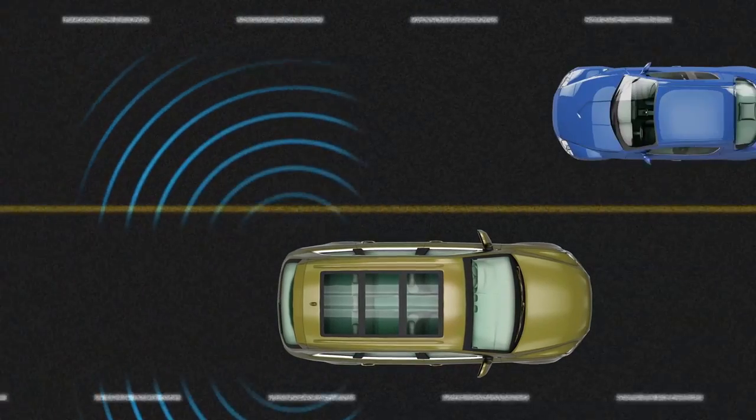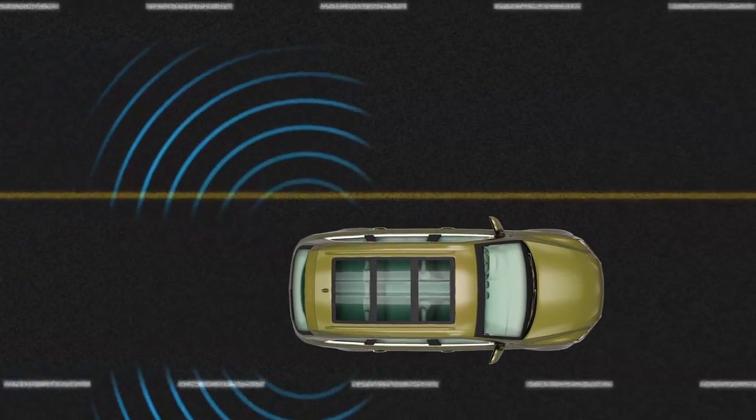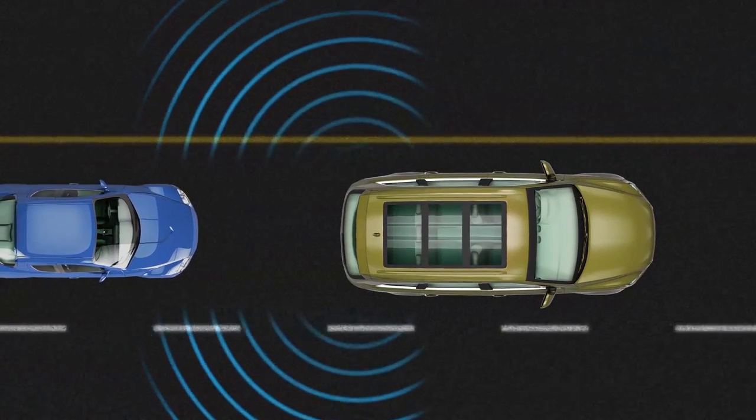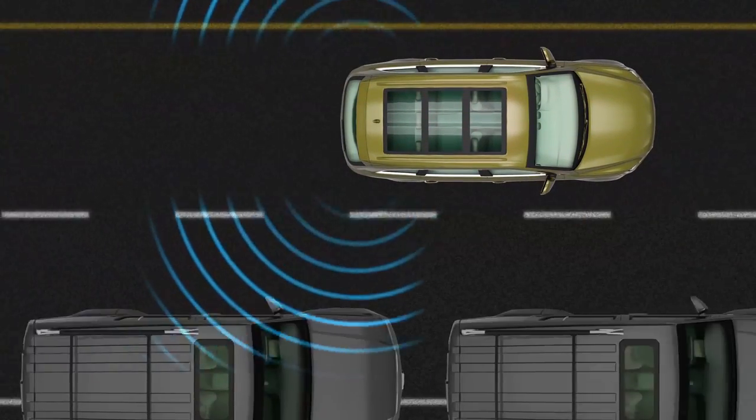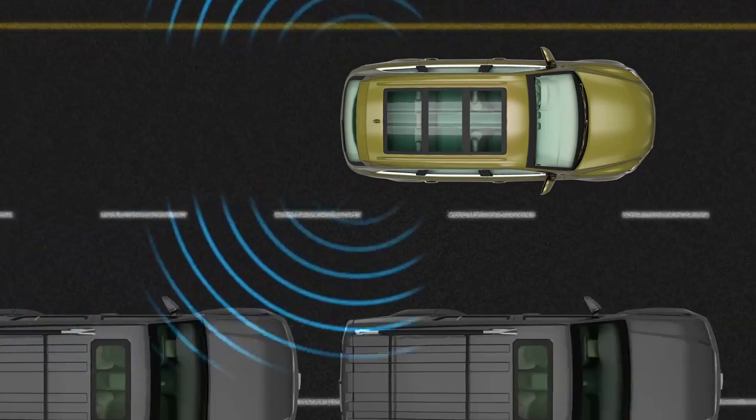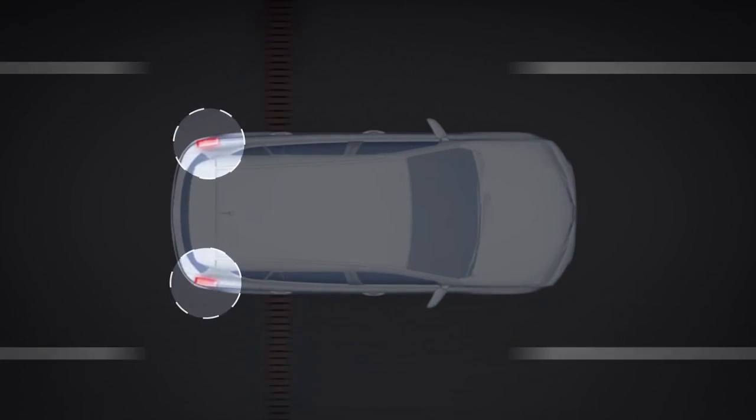The system will not provide a warning if the target vehicle is overtaken, if it approaches from the opposite direction in an adjacent lane, or if it approaches from behind in the same lane. Neither will it activate when the Toyota approaches a stationary object, such as a guardrail, wall, or parked cars.